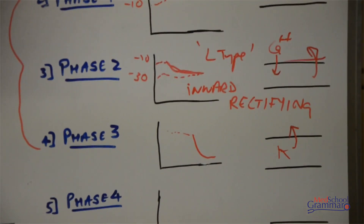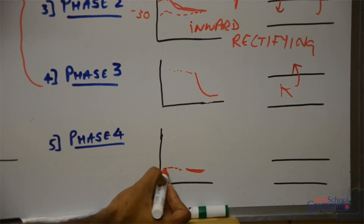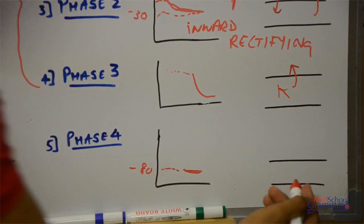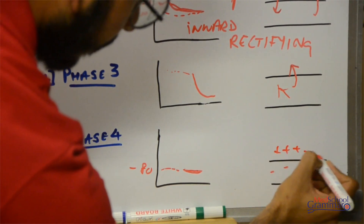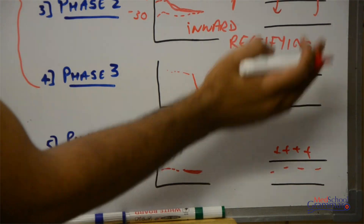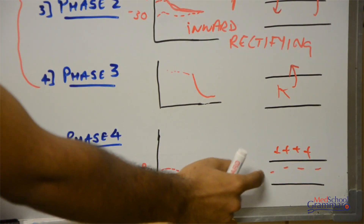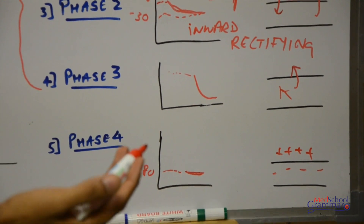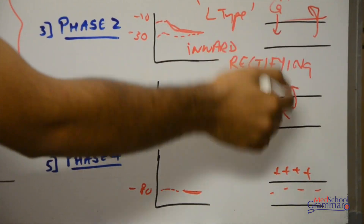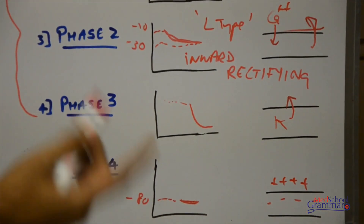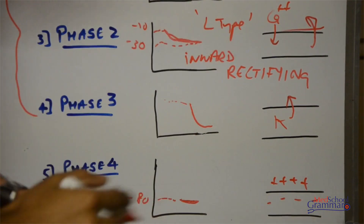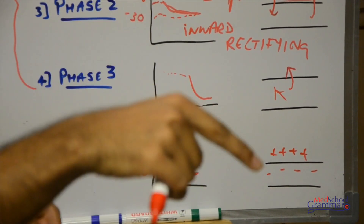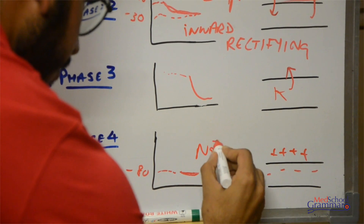Phase 4 is when the resting membrane potential has been reached, at about minus 80 millivolts. Inside is negative and outside is positive — we are back to where we started. In phase 3, the calcium channels also close and outward rectifying potassium channels open. The resting membrane potential is then maintained by the activity of the sodium-potassium pump.